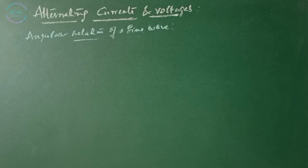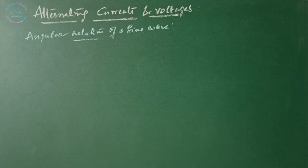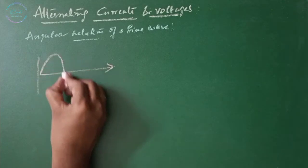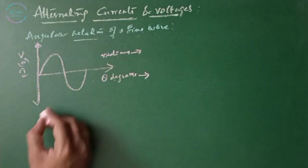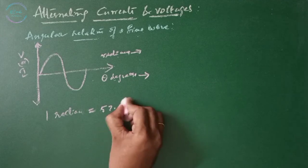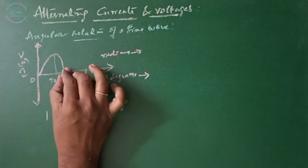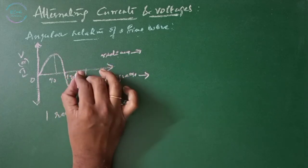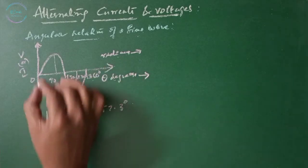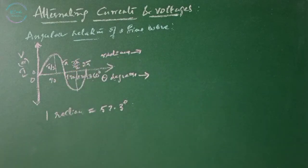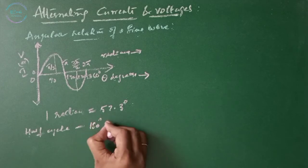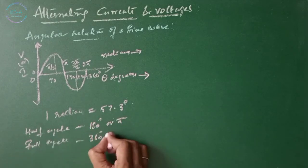Angular relation of a sine wave: a sine wave can be measured along the x-axis on a time base, which is frequency dependent, or a sine wave can be expressed in terms of angular measurement. This angular measurement is expressed in degrees or radians, where one radian equals 57.3 degrees. In degrees: 0, 90, 180, 270, and 360 degrees; in radians: 0, pi by 2, pi, 3 pi by 2, and 2 pi. The wave completes half a cycle in 180 degrees or pi radians, and a full cycle in 360 degrees or 2 pi radians.